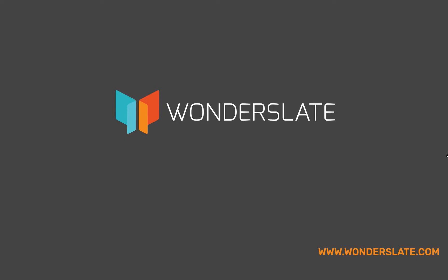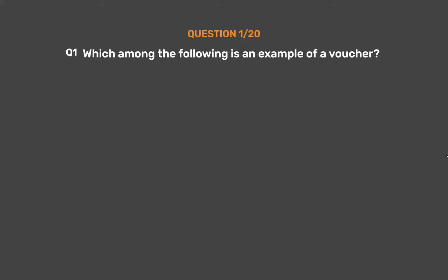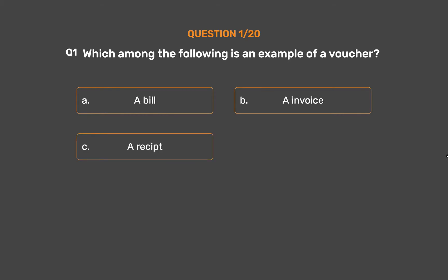Welcome to Wonderslate. Subscribe to our Telegram channel given in the description for updates and study materials. Topic for today's quizzes: recording of transactions. Question number one: which among the following is an example of a voucher? Option A: a bill. Option B: an invoice. Option C: a receipt. Option D: all of the above.